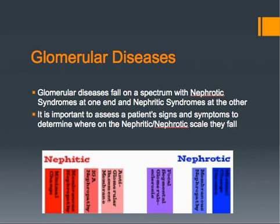Glomerular diseases fall on a spectrum with nephrotic syndrome at one end and nephritic at the other. Patients may also have a mixture of nephrotic and nephritic symptoms, such that at the least severe end of the nephrotic spectrum, hematuria is often found. The classic nephrotic syndrome diseases are minimal change and membranous glomerulonephritis. The classic nephritic syndrome disease is post-infectious glomerulonephritis. The extent of the spectrum can be seen in the graphic on this slide.